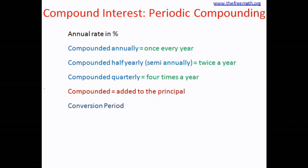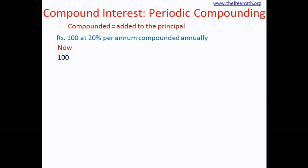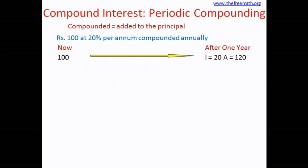Let's take an example. Consider 100 rupees at 20 percent per annum compounded annually. Since it is compounded annually, we calculate the interest after one year. The interest will be 20 rupees because the rate is 20 percent, and therefore the amount will be 120 rupees, which is 100 plus 20.